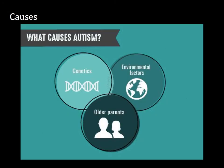Despite not knowing exact causes of ASD, researchers have identified some risk factors which sometimes correlate with ASD. One risk factor is biological sex: males are four times more likely to develop ASD than females, though that statistic might reflect a problem with testing. Another risk factor is family history — while no gene for autism has been identified, parents who have one child with ASD have a higher risk of having more children with ASD. Extremely preterm babies, those born before 26 weeks of gestation, are also at greater risk. Finally, some research suggests a correlation between parental age and ASD, but the connection is still very vague and more research needs to be done.